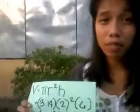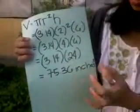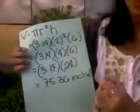75.36, and our unit is cubic inches. So the volume of the cylinder is 75.36 cubic inches. So that's all. Thank you.